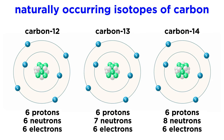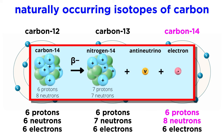The utility of radiometric dating is based on the existence of isotopes, or atoms of the same element with differing numbers of neutrons. Carbon, for example, has three naturally occurring isotopes: carbon-12, carbon-13, and carbon-14. Of these, only carbon-14 is radioactive, due to an unfavorable proton-to-neutron ratio. It will therefore break down into nitrogen-14 via beta decay, or the emission of an electron which causes a neutron to become a proton, thereby transmuting the nuclide.